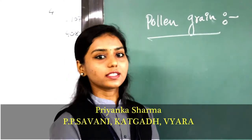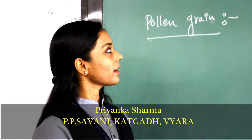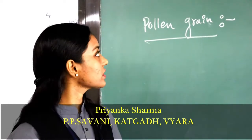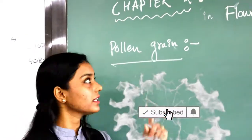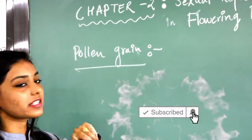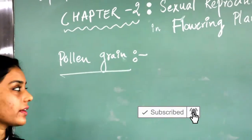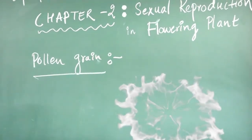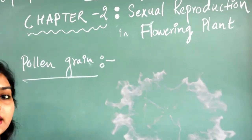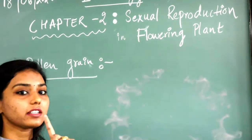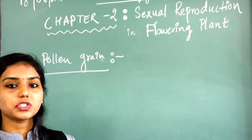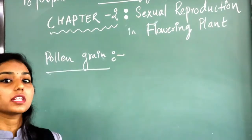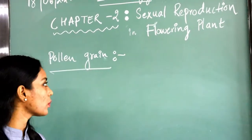Hello dear students. I am back with the next part of the chapter, that is sexual reproduction in flowering plants of Class 12. Before this lecture, we have seen something regarding the structure of stamens, microsporangia, and pollen grains.